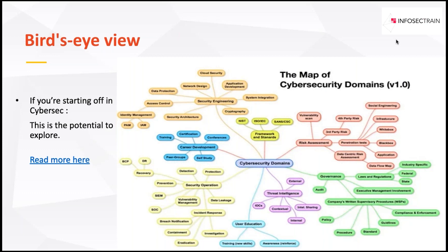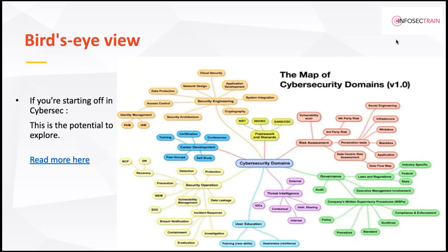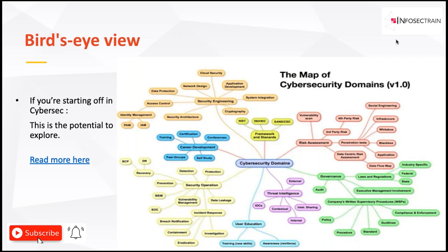Once you feel comfortable enough in one thing, you can start working on a second thing in parallel — there's no harm in that. But make sure you follow a T-type structure for your career. Imagine the letter T: the horizontal bar shows the diversity of your knowledge — cryptography, GRC, auditing, SOC, threat intelligence, and so on across ten different domains. The vertical bar in the middle shows the one technology where you are an expert — say SIEM or QRadar. That is your forte and your playground.